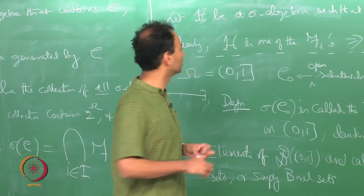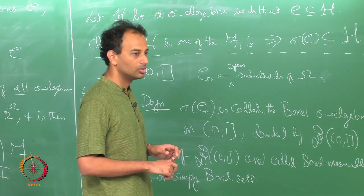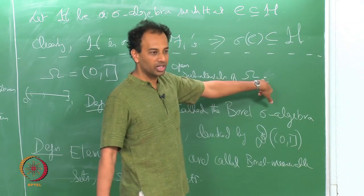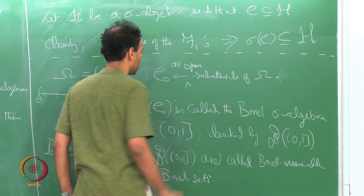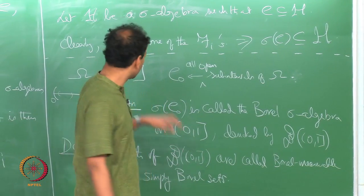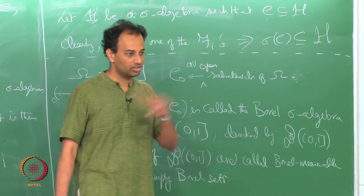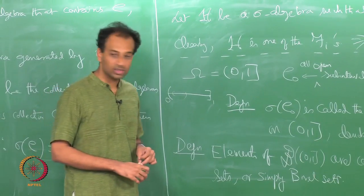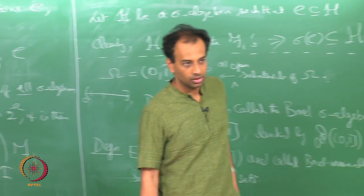C_0 is the set of all open sub-intervals of omega — all open sub-intervals of omega — that is, all sets of the form open interval (A,B) where A and B are in (0,1].